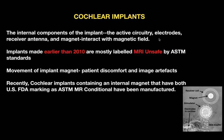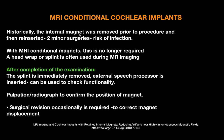Cochlear implants: the internal components are the active circuit, electrode receivers, antenna, and stimulator, which can interact with the magnetic field. Implants manufactured earlier than 2010 are mostly labeled MR Unsafe by ASTM standards. The magnetic field can cause movement of the implant magnet, patient discomfort, and image artifacts. Recently, cochlear implants containing an internal magnet with both USFDA and ASTM MR Conditional marking have been manufactured. Historically, the internal magnet was removed prior to MRI and reinserted afterward; with MR Conditional magnets, this is no longer required. A head wrap or splint is used during MR imaging to maintain position.